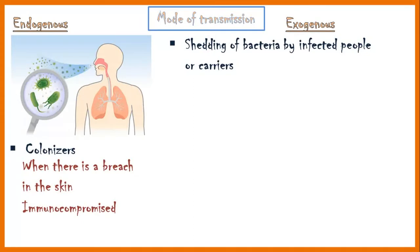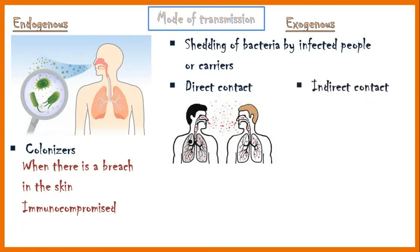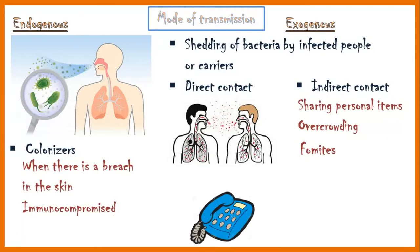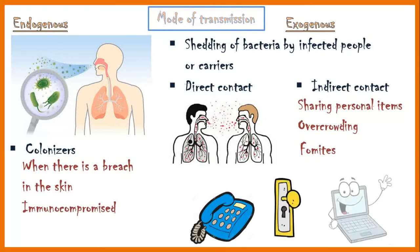Exogenous transmission can occur via direct contact or indirect contact. Sharing personal items, overcrowding, and fomites are some examples for indirect contact. A fomite is a non-living object which has the ability to carry infective agents — for example, telephones, doorknobs, and laptops, etc.